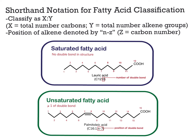To take this a step further, the position of the alkene group within the carbon chain can be denoted by adding after Y the letter N, which indicates the particular carbon number location, and Z, which is the carbon numerical location where the alkene group begins.